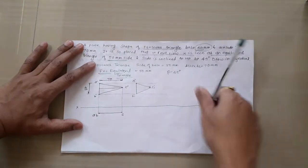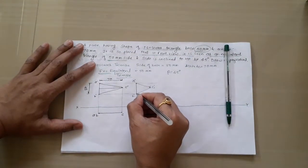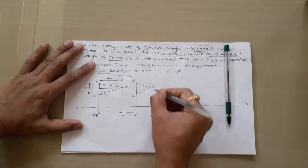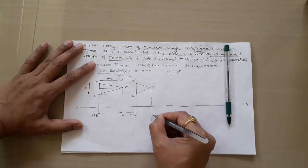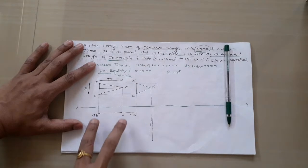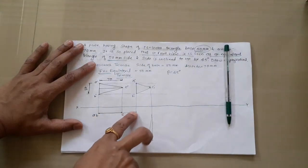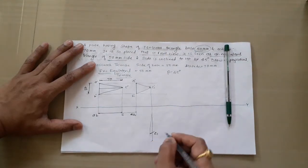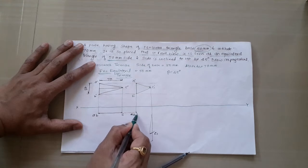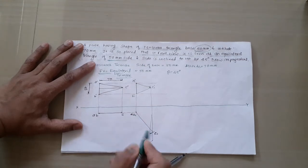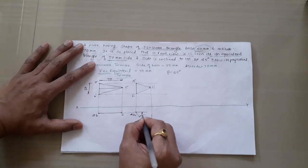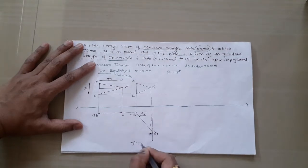Take projections in the downward direction and also take the projection of the previous top view. Mark A1 B1, then take the projection of C1-dash downward. Take the AC distance in your compass, place center at A1-dash, and cut an arc on that projector from C1-dash to get C1. The line A1-C1 represents the inclination of the plane with VP. Measure this inclination angle and note it below the solution.